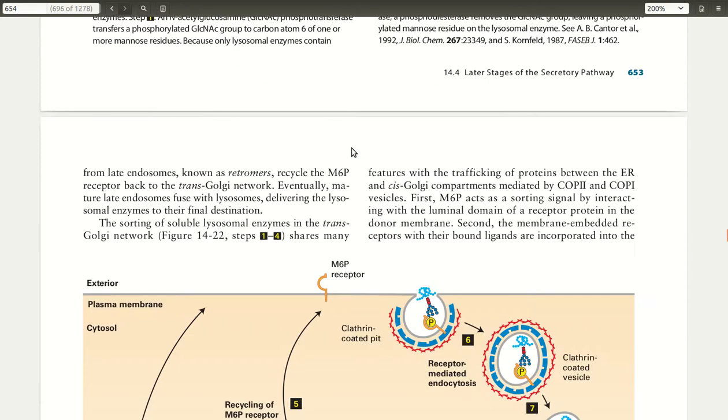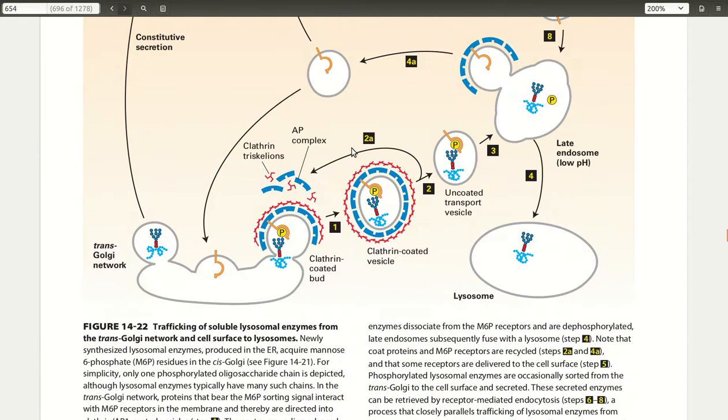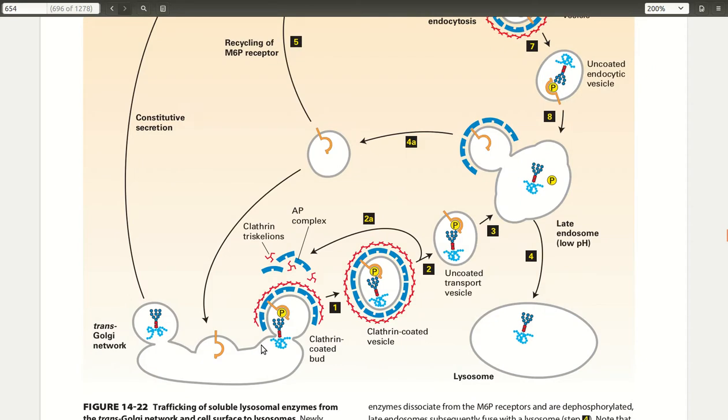You see here that we have the trans Golgi network here, and this phosphorus group from that modified lysosomal enzyme is able to bind to one of these membrane receptors.